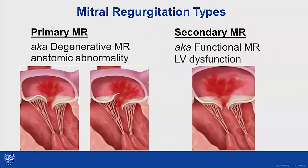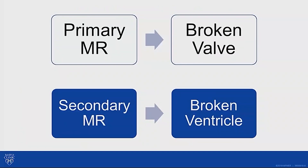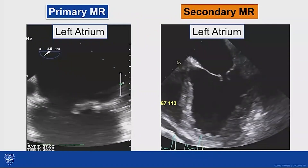To highlight the distinction — and these can overlap in some cases — primary mitral regurgitation refers to degeneration of the valve: prolapse, a flail segment. But with secondary mitral valve regurgitation, sometimes called functional or dysfunctional, it's really a problem of LV dysfunction and the effect of the left ventricle on the mitral valve causing it to regurgitate, rather than degeneration of the valve leaflets themselves. In simple terms, primary MR is a broken valve, whereas secondary MR is a broken ventricle reflected in mitral valve regurgitation.